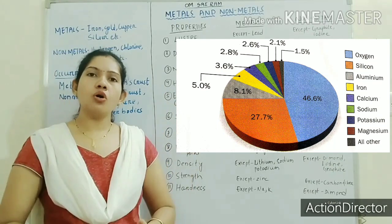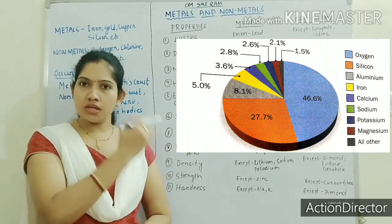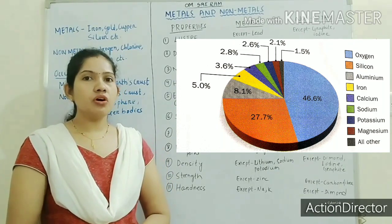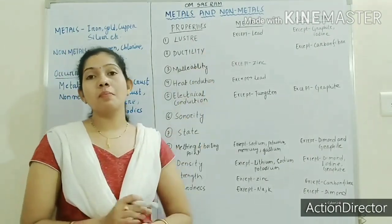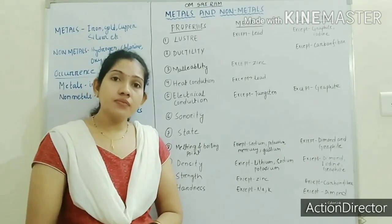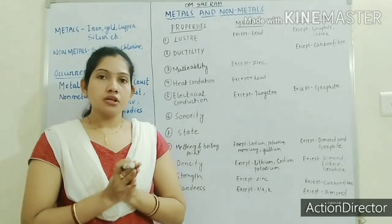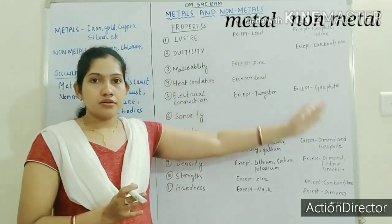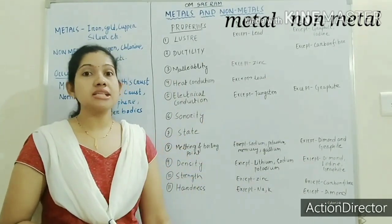Details about all the occurrences we will have in the next part. This is only an introductory part for metals and non-metals. Now let us move on to the most important topic — the properties of metals and non-metals, and based on what properties we can differentiate them. I have already made a table for you and we will discuss all the properties in detail.